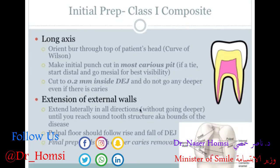The next step is to extend the external wall. After you make the initial punch cut, you extend laterally in all directions without going deeper. You want to extend laterally until you reach sound tooth structure — the bounds of the disease. The pulpal floor will generally follow the rise and fall of the DEJ area. The final prep deals with deeper caries removal. The idea is to expand your window so you can see what you're doing before going deeper towards the pulp.